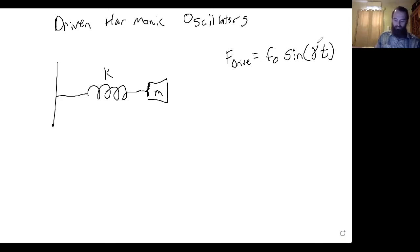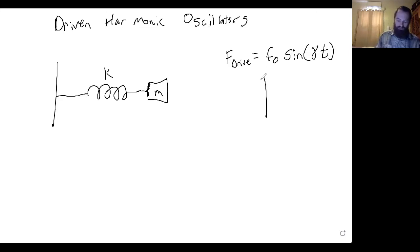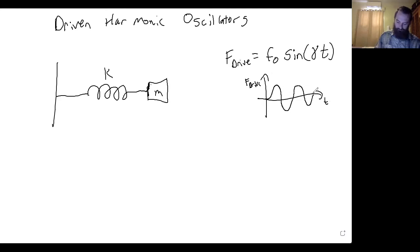This gamma is the angular frequency of the oscillation. So if you plotted the driving force F_drive versus time, you would just get some sinusoidal force.